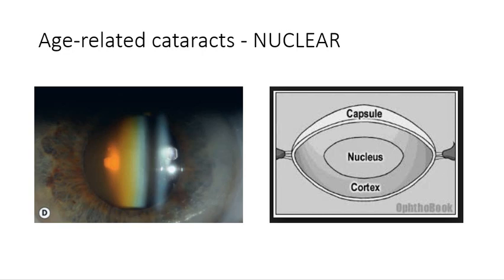Nuclear cataracts occur in the nucleus of the lens — have a look at the schematic diagram on the right-hand side for the location. They are often characterised by a yellowish hue, and this colour gets stronger as the cataract advances, eventually appearing quite brown. You can see on the left the nuclear cataract looks quite orangey-yellow through the pupil.